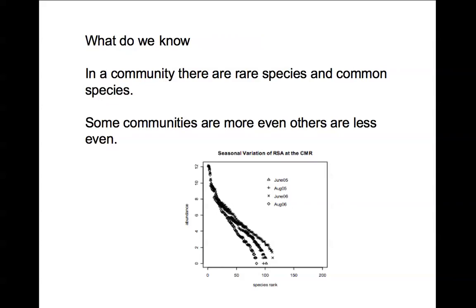To reiterate: in a community there are rare species and common species, and some communities are more evenly distributed than others. The relative abundance distribution curve here indicates more evenly ranked species, while the graph on the left shows fewer species that are less abundant or more rare.